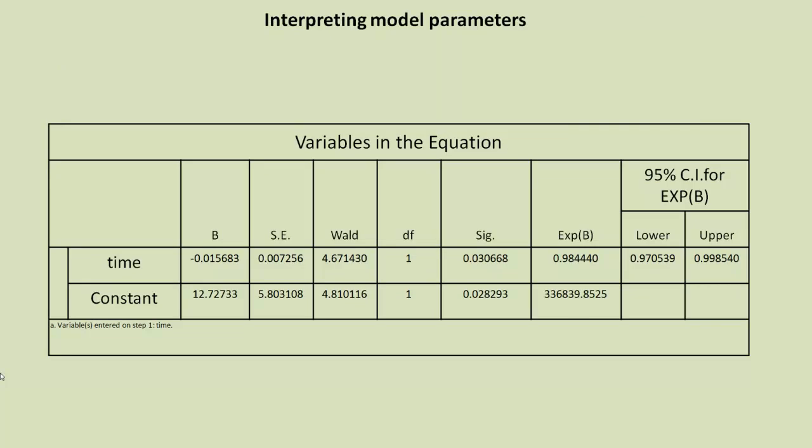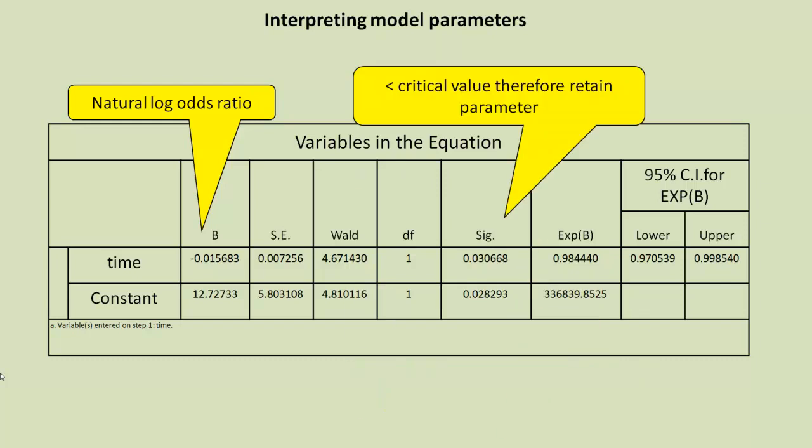Along with those measures, we also get a table which shows us parameter estimates as you would do in the regression equation. So taking that example of the treadmill time in seconds and the outcome variable was presence or absence of heart disease, this is our table of parameter estimates. So we have here b, which is equal to the natural log of the odds ratio. And then we have the p-value associated with that, indicated by the sig value there.